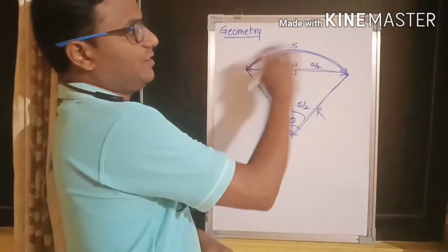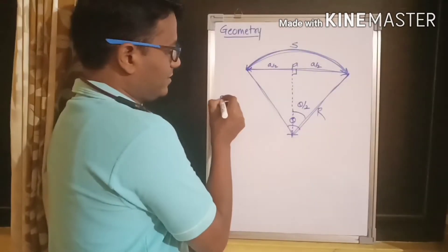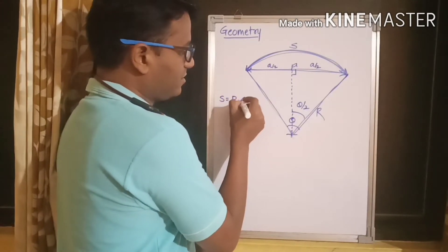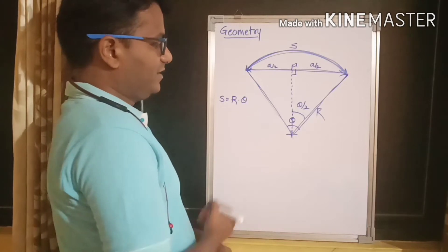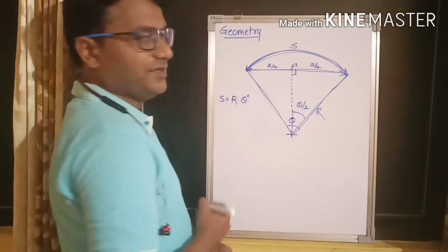Now, we know that arc length s is equal to radius times theta. But, remember one thing. This theta over here is measured in radians.